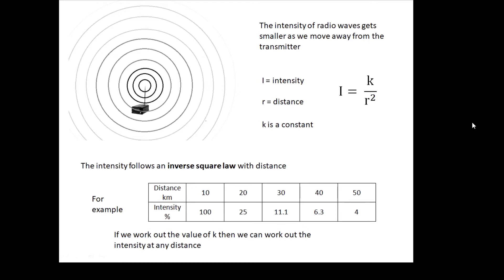If you look at this table, going from 10 kilometers to 20 kilometers, the intensity goes from 100 to 25 percent. Going from 20 to 40, the intensity is a quarter as much. A quarter of 25 is 6.3. It follows an inverse square law.